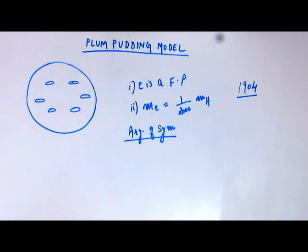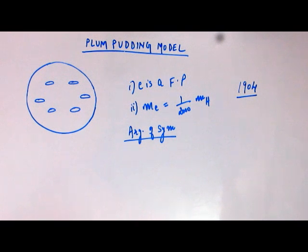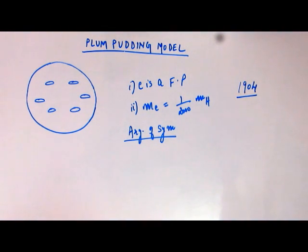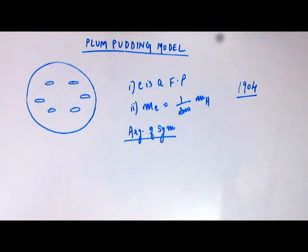So he explained the stability and the reason why electrons are knocked out as observed in the cathode ray tube experiment. This sounds pretty good, and people accepted this model. He also explained many other things.